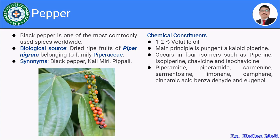Look at the image so that we understand how black pepper looks like. This is not a dried one, but if you can see, you will observe the shades of black pepper from green to black, which are the dried ones.